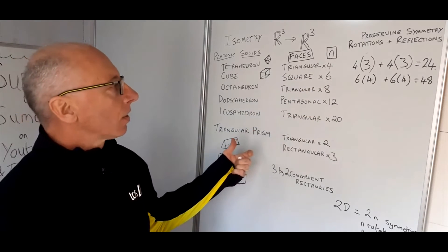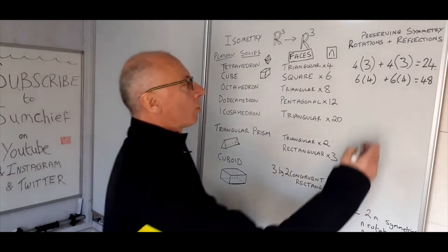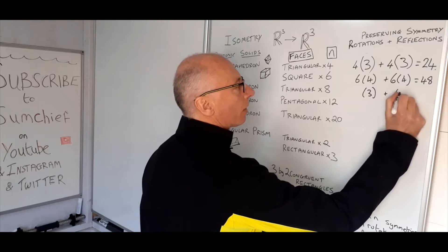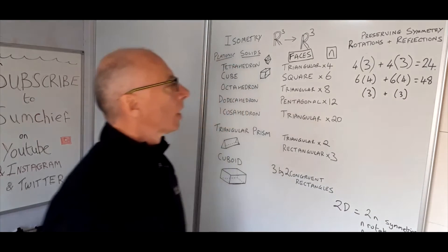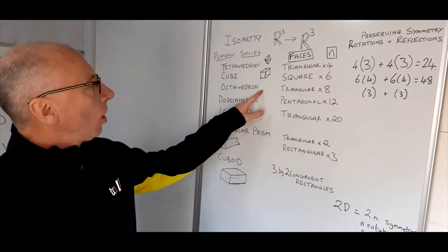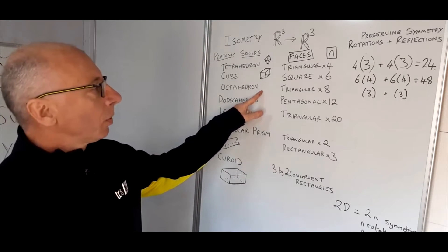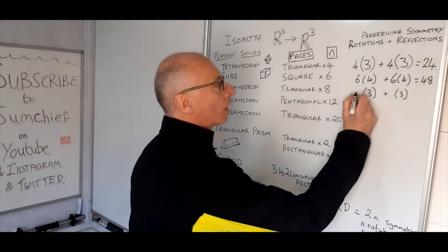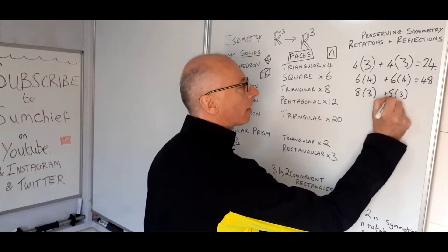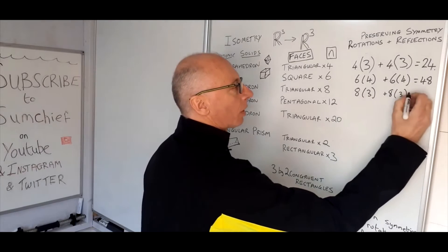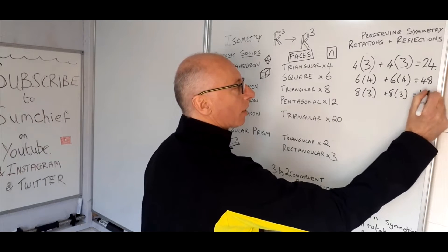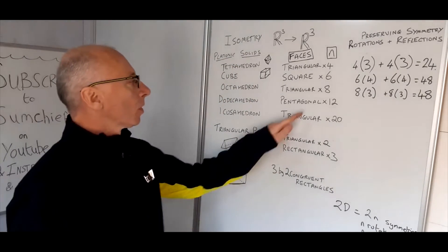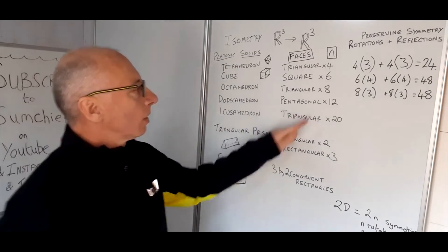The octahedron has eight faces, each triangular. The triangle has six preserving symmetries: three rotations and three reflections. Whichever face you place the octahedron on, the symmetries still hold. So multiply by eight: three eights are 24, plus another 24 — that's 48, interestingly the same as a cube.